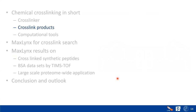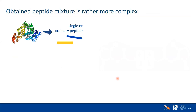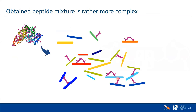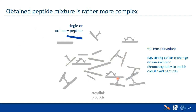Now we know about cross-linkers. Let's talk about the cross-link products. In a typical experiment, we have ordinary peptides with no cross-linker attached. But in our sample, we have various products. What we actually aim for is the cross-linked peptide — a cross-linker between two peptides — because it tells us if proteins are interacting or if structure-wise these two peptides are very close to each other. However, we still have a lot of single ordinary peptides, which are the most abundant, and there are techniques like strong cation exchange or size exclusion to enrich the sample.